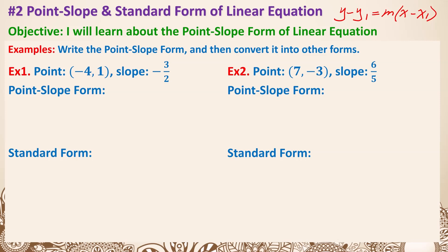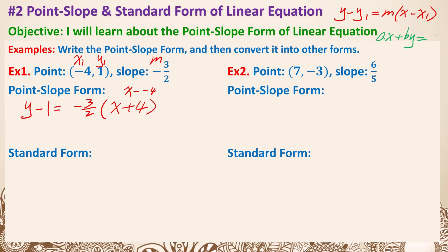For example 1, x1 is negative 4, y1 is 1, and m is negative 3 halves. So the point-slope form is y minus 1 equals negative 3 halves times (x minus negative 4), which becomes x plus 4. Our goal is to get x and y on the same side and all other numbers on the other side.